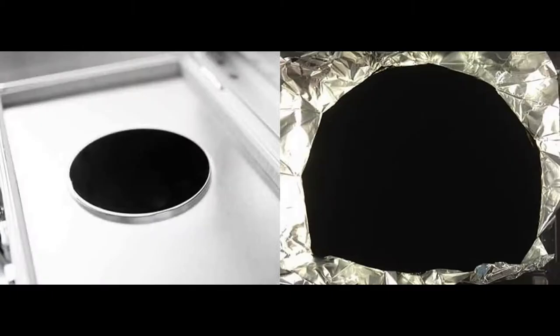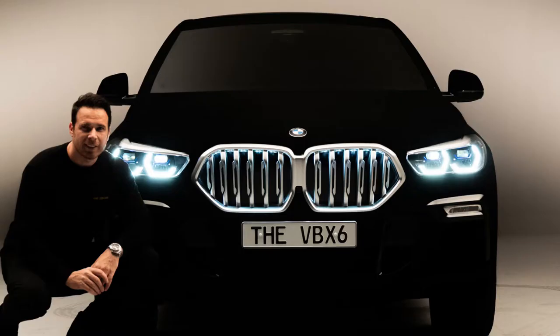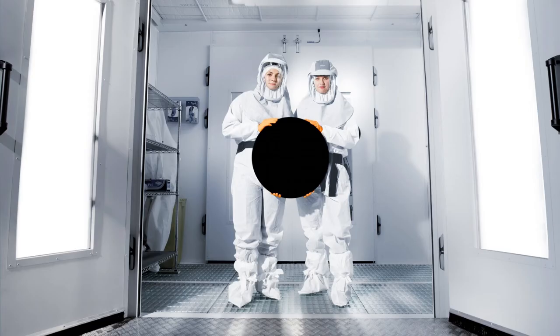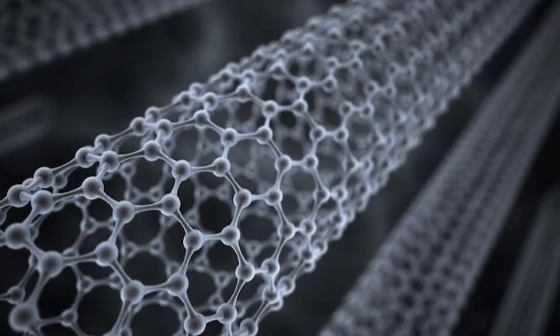But while the rest of the world was being shocked by Vantablack, MIT scientists were accidentally creating the blackest black material from carbon nanotubes that is reportedly 10 times darker than any ultra-black material created before, including Vantablack.